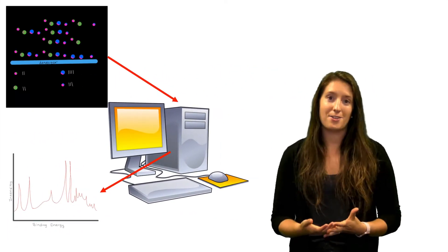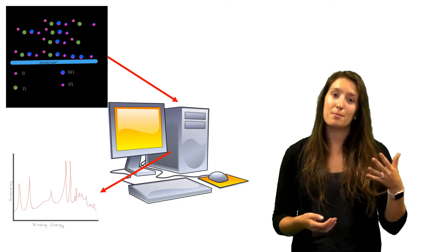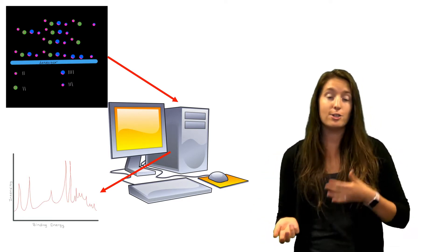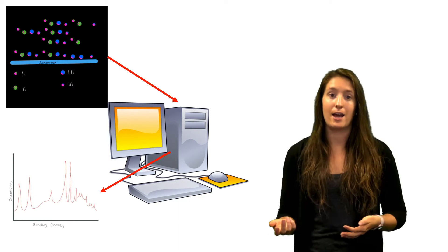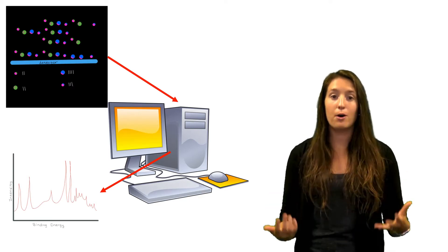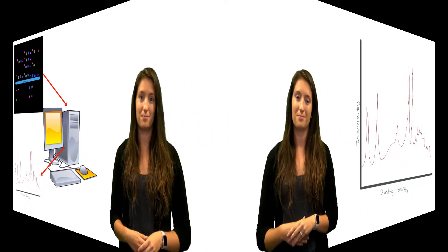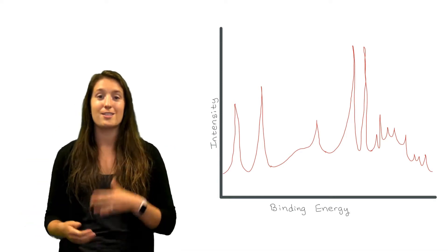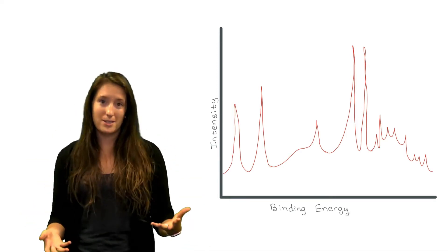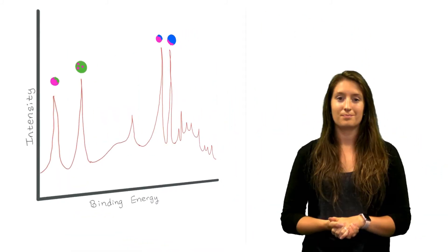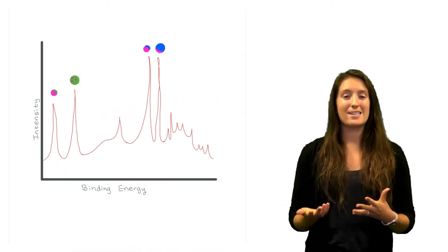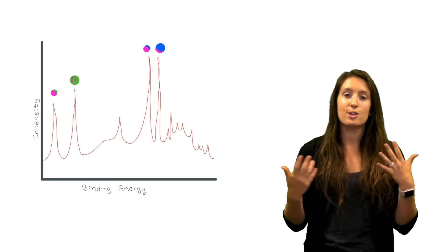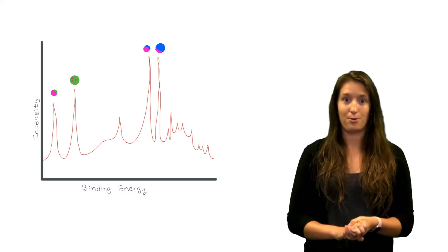Once the X-rays are done making the electrons jump, the computer takes all of the energy, speed, and number data from the detector and puts it all together for us. Then it makes a picture that shows us how many electrons at each energy bumped into the detector. Then we can tell how many of each atom was present and whose hand it was holding.